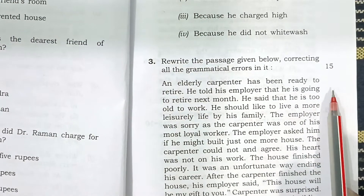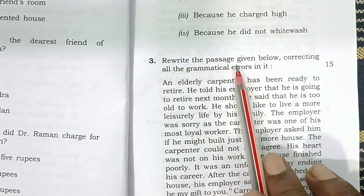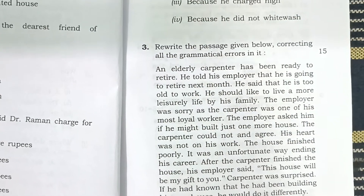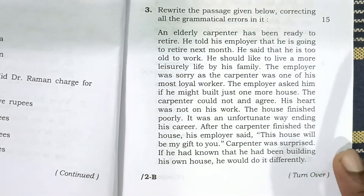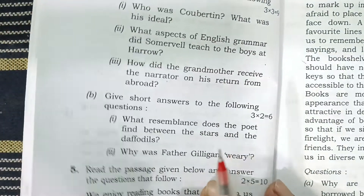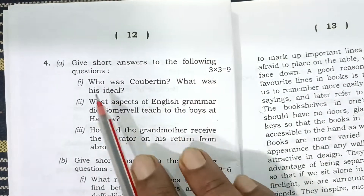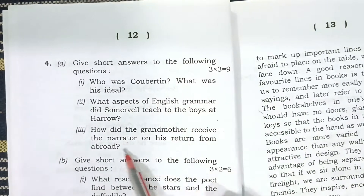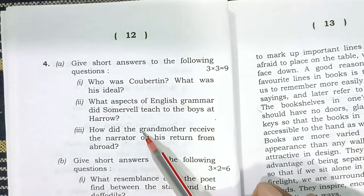Next is question number 3. Question number 4 asks you to give short answers to the following questions — three questions worth 3 marks each, so 3 times 3 marks.